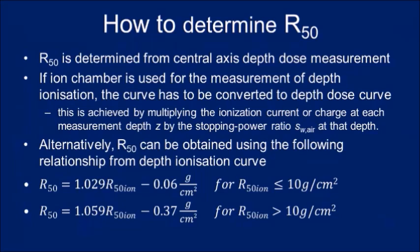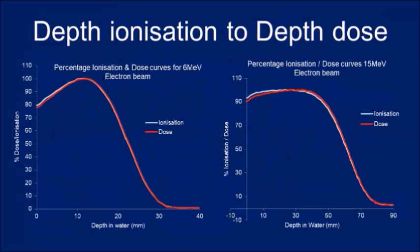To convert depth ionization to depth dose when using an ion chamber, multiply the ionization at each depth Z by the stopping power ratio SWR. Alternatively, empirical formulas from TRS-398 can be used: for low energies R50(dose) = 1.029 × R50(ion) − 0.06, and for high energies use 1.059 and 0.37. Most commercial water phantom software automatically performs this conversion from depth ionization to depth dose.